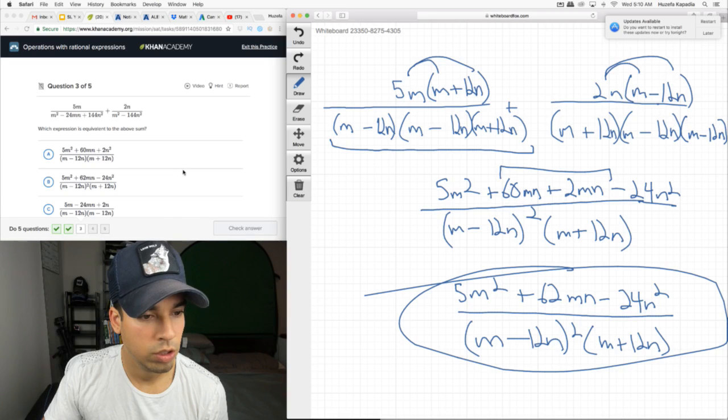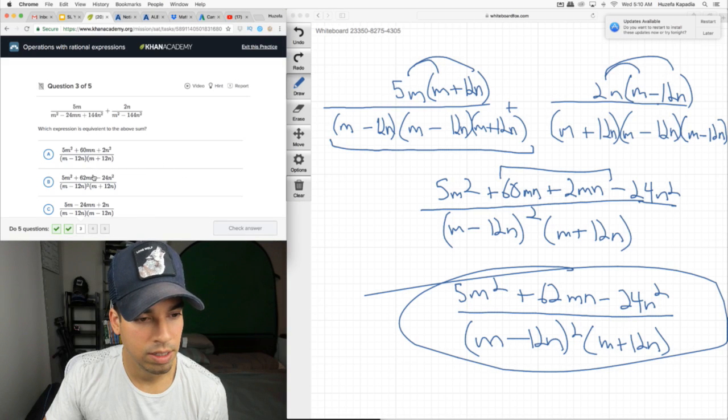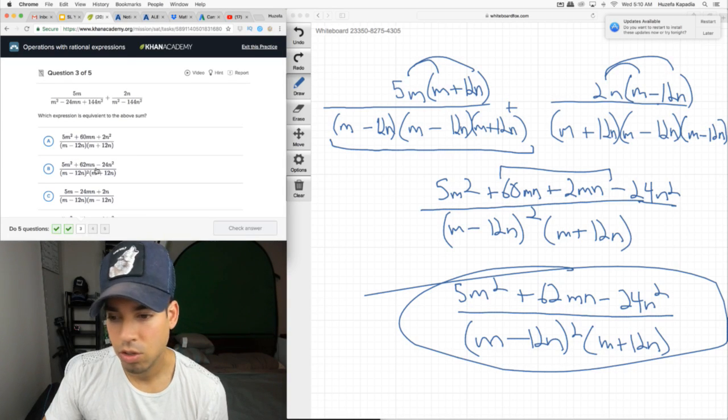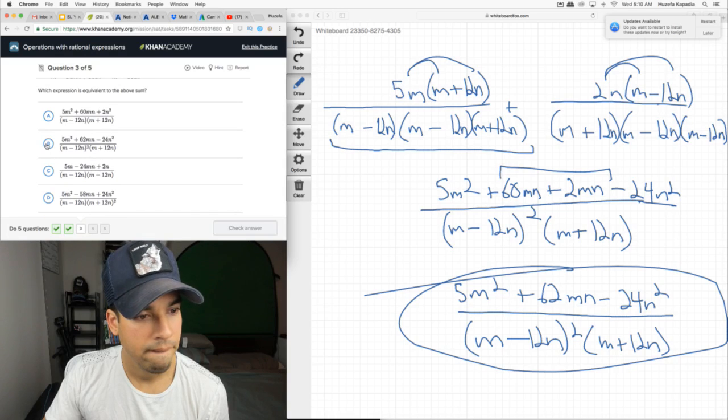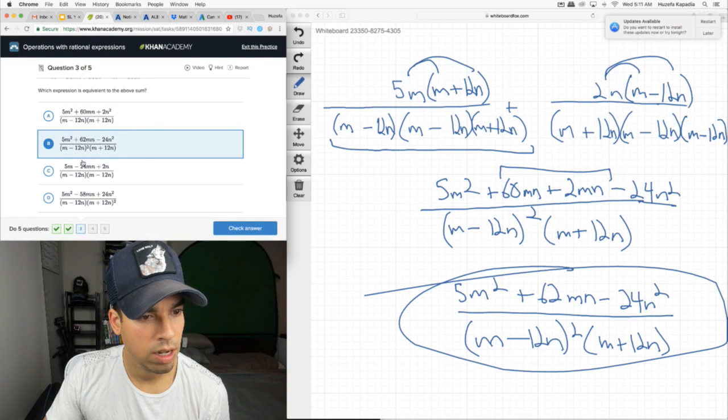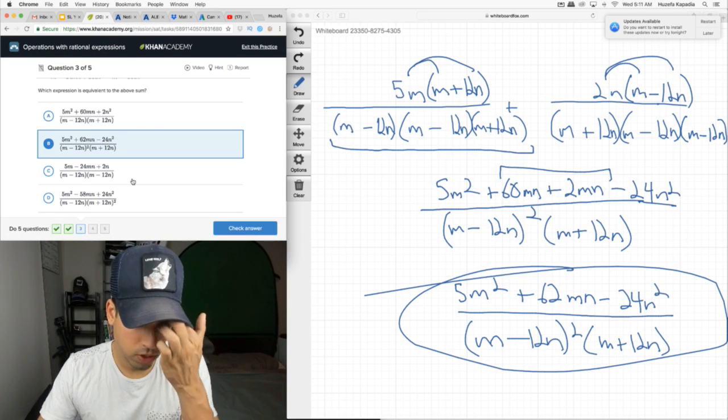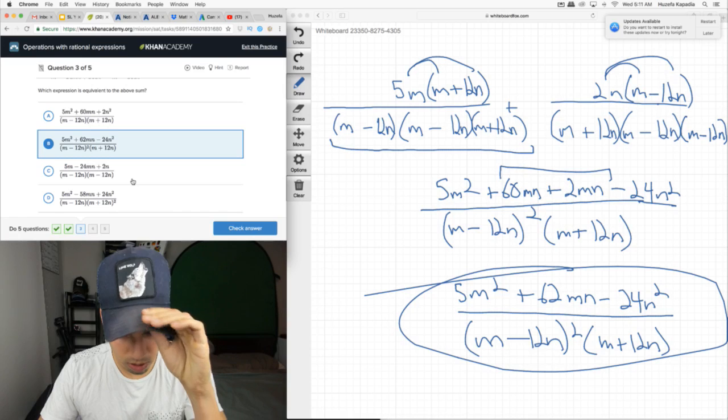And, now let's consolidate these two. This becomes 5M squared plus 62MN minus 24N squared over M minus 12N squared times M plus 12N. And, that's it right there. So, let's see which one it is. We need a 60 in the middle. That's not. It's 62. This looks like our winner. Otherwise, all the denominators are almost the same. No, this denominator is wrong. That denominator is wrong.